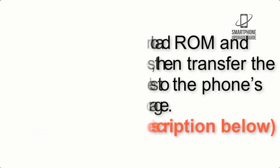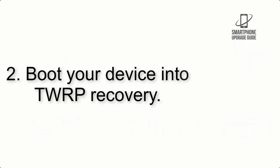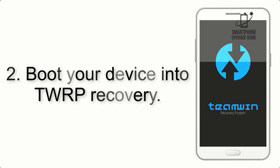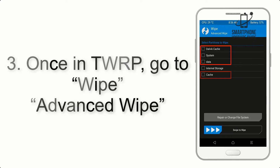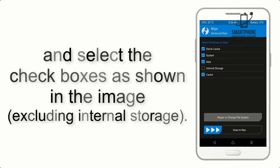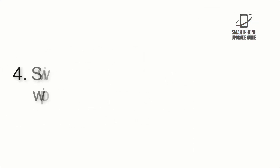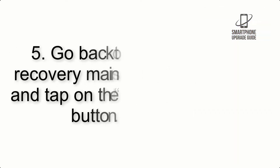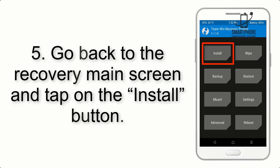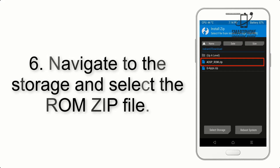Step 2: Boot your device into TWRP recovery. Once in TWRP, click on Wipe, then Advanced Wipe, and select the checkboxes as shown in the image, excluding internal storage. Step 4: Swipe the button to wipe the device.